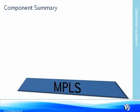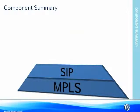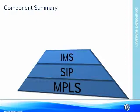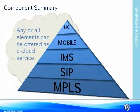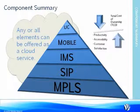Today we saw that the foundation to the new network is MPLS. With SIP and SIP trunking, you gain amazing cost savings and call routing benefits. IMS then finally brings your mobile users into your enterprise voice environment, which becomes highly effective and powerful with a suite of unified communication services. All of this can be deployed in the cloud, which lowers your total cost of ownership, while at the same time increases productivity, accessibility, and customer satisfaction.